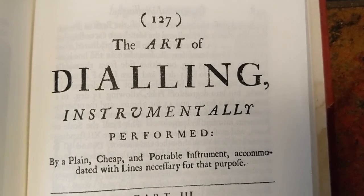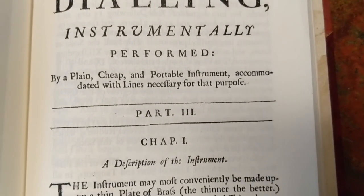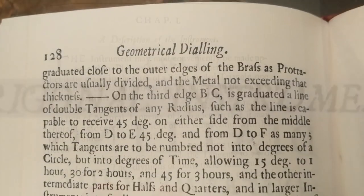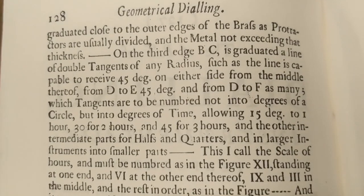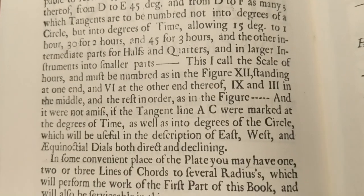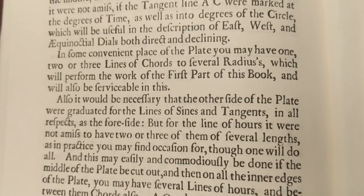Later in the book, Laybourne describes an instrument he designed to make this whole process easier. He calls it the horological trigon, or trigonal instrument. It is basically a physical trig table with scales for tangents, sines, and chords. It also has the scale of hours, which is really a second tangent scale specifically designed for laying out the hour lines.